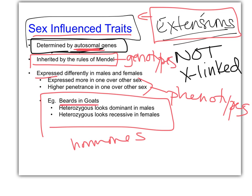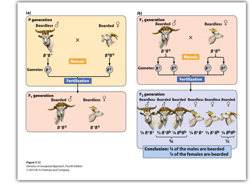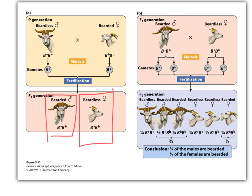An example would be having a beard in a goat. In the heterozygote, it looks dominant in males, and in the heterozygote, it looks recessive in females. So here are some goats. What if you have a beardless male — homozygous — and a bearded female, which means she has to be homozygous? The F1 are both heterozygotes. In the male, the heterozygote is bearded. In the female, the heterozygote is not bearded.